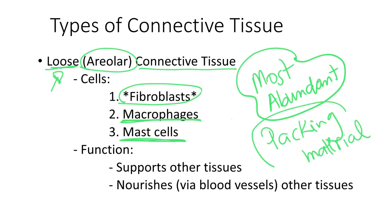When we look at the function of the loose connective tissue, since it is found everywhere, the first thing that comes to mind is that it supports other tissues. So one of the functions of the loose connective tissue is to support other tissues. And since the fibroblasts produce the three different types of fibers — collagen fibers, reticular fibers, and elastic fibers — the loose connective tissue will have strength and elasticity as well.